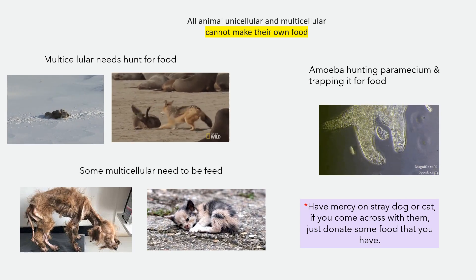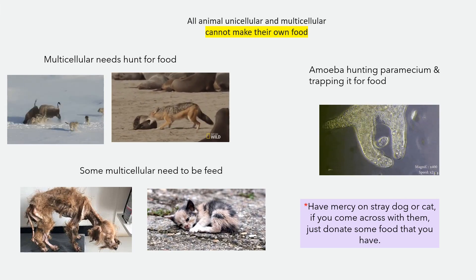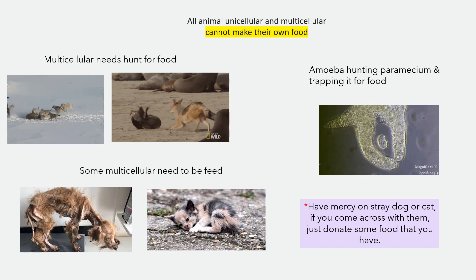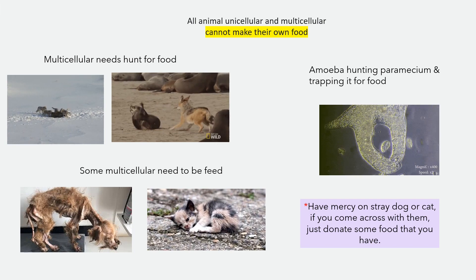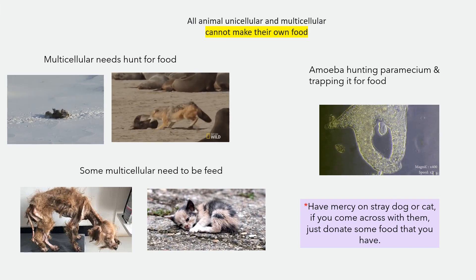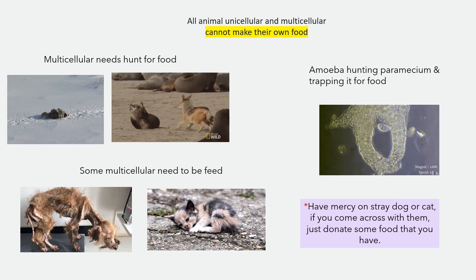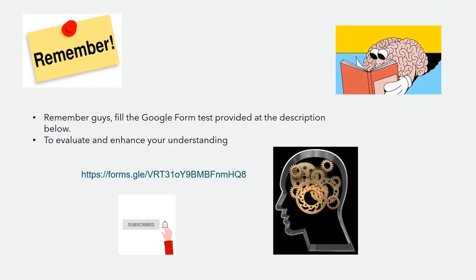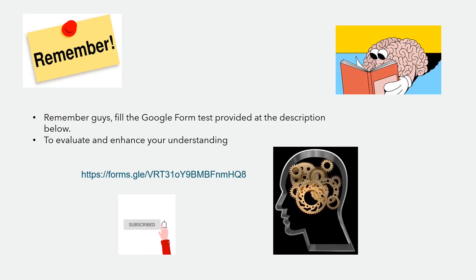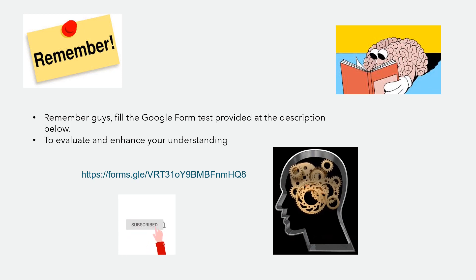For the moral value today: always have mercy on stray cats and dogs if you come across them — just donate some food that you have. Remember to fill in the Google Form test provided in the description below to implement and enhance your understanding. Don't forget to subscribe. Bye-bye!